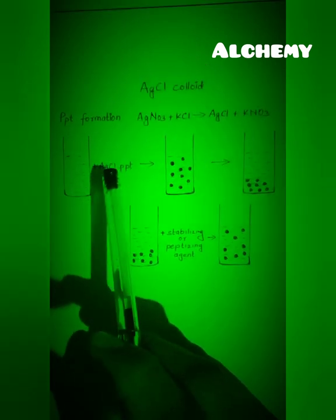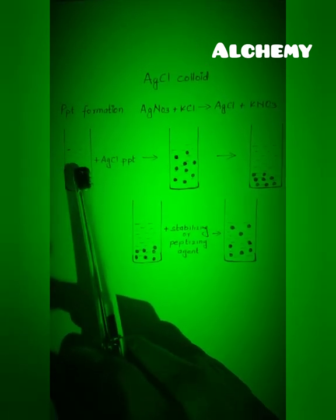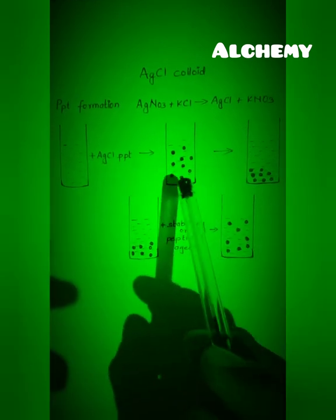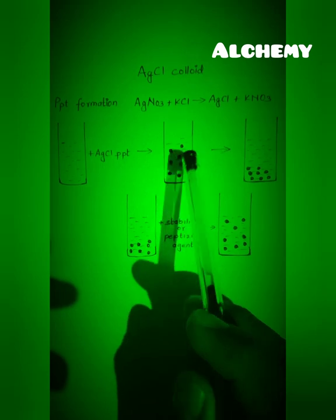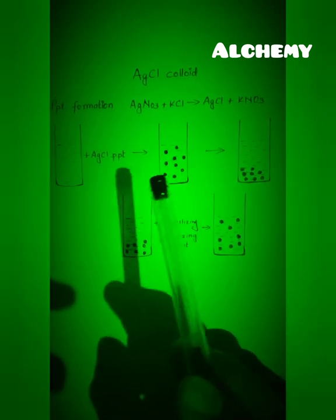Next step is mixing this AgCl precipitate with water, that is the dispersion medium. After rigorous shaking, we get a colloidal solution in which AgCl particles are uniformly distributed throughout the solution.